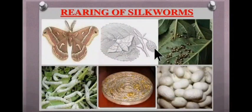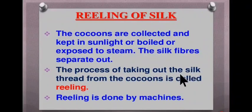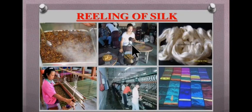Here are pictures showing the rearing of silk worm. Next comes reeling of silk — cocoons are collected and put in boiling water. Once spinning is complete, the cocoons are placed in boiling water to kill the developing moths before they can emerge and destroy the silk, and to loosen the filaments. The cocoons are carefully unraveled by the process called reeling or filature and the filaments are placed on a large reel. The process of taking out silk thread from the cocoons is called reeling, and it is done by machines.